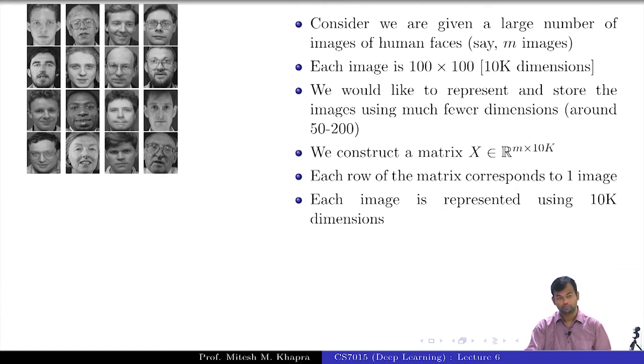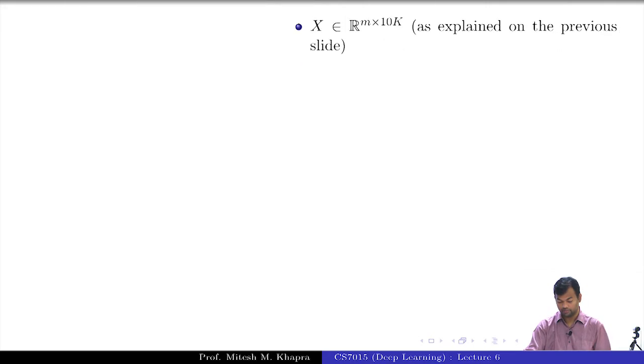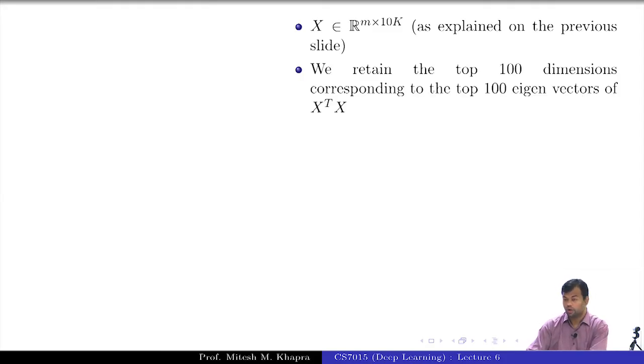You compute X^T X. We retain the top 100 dimensions corresponding to the top 100 eigenvectors of X^T X. Basically we do a PCA, find all the eigenvectors of X^T X and then just retain the top 100 of those.